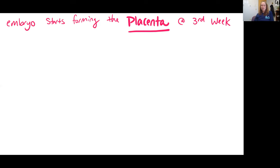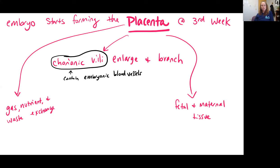The embryo starts to form the placenta pretty early — by about the third week, we're seeing development of the placenta. The placenta is interesting because it's actually an organ shared between two individuals: a portion is formed by the fetus and a portion is made of maternal tissue. We have structures called chorionic villi, which come from the embryo, enlarge, and branch into the endometrium lining, forming the fetal portion of the placenta. Embedded in each of these villi are embryonic blood vessels. The job of the placenta is to allow for gas, nutrient, and waste exchange between the fetal blood supply and the maternal blood supply — not through mixing, but through fetal capillaries side by side with maternal capillaries, allowing diffusion and exchange.